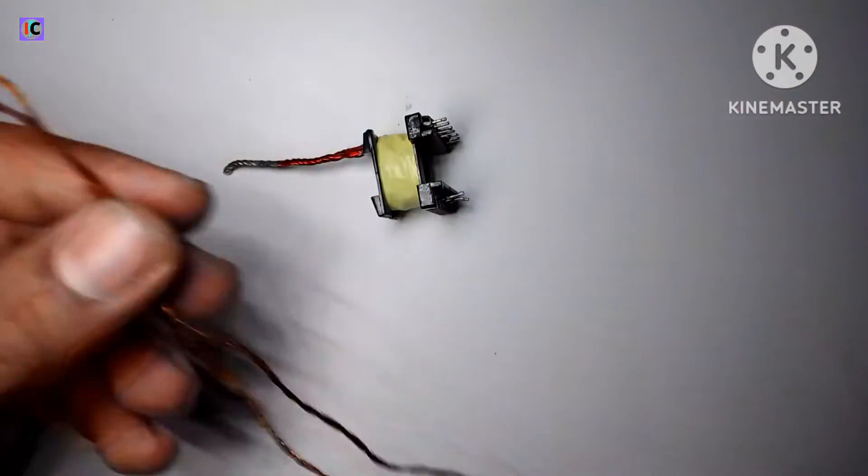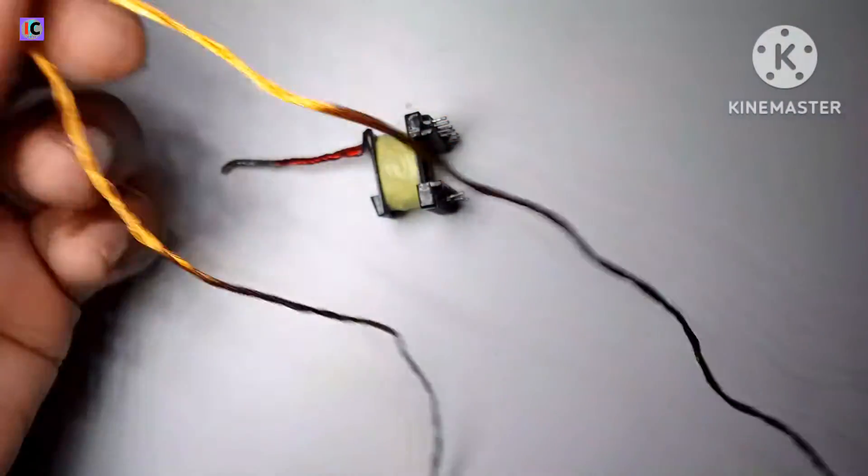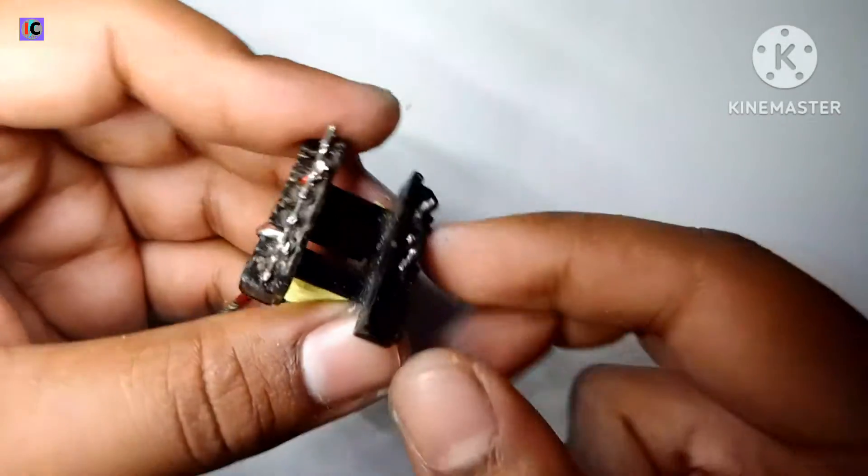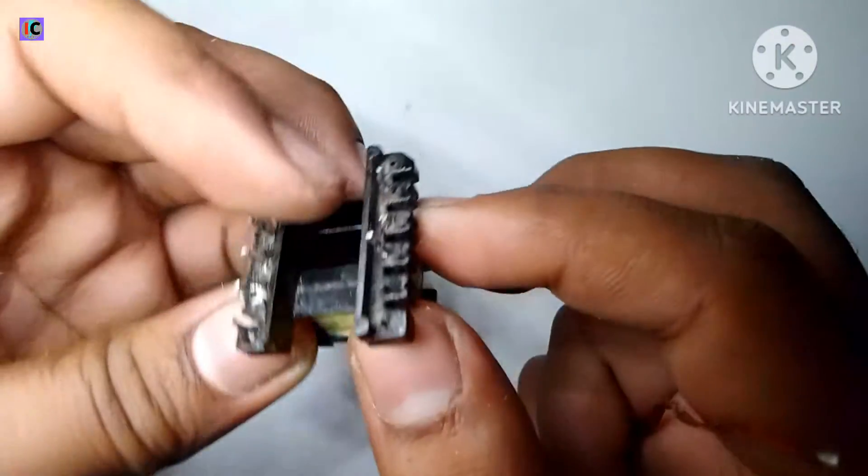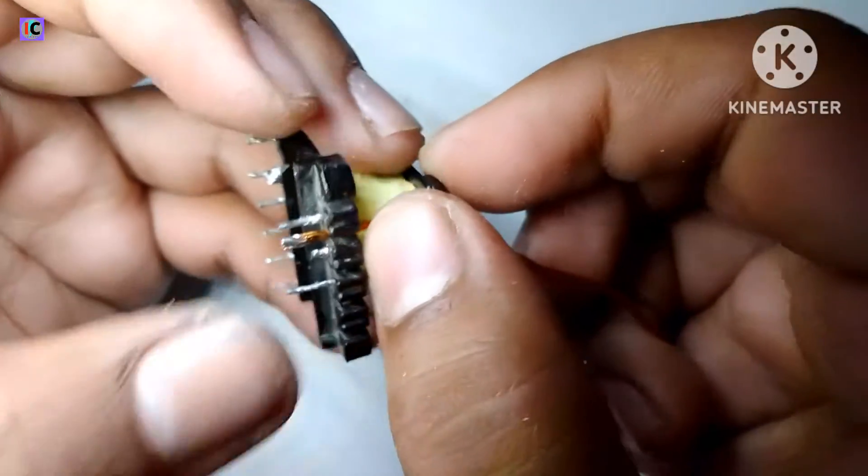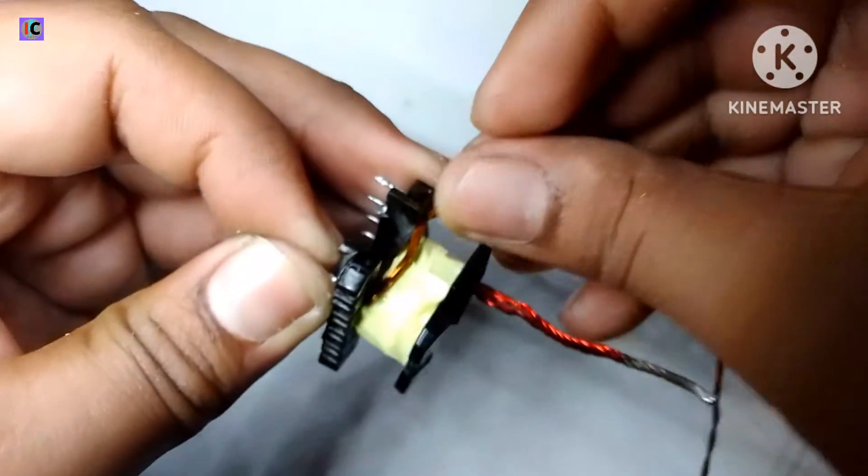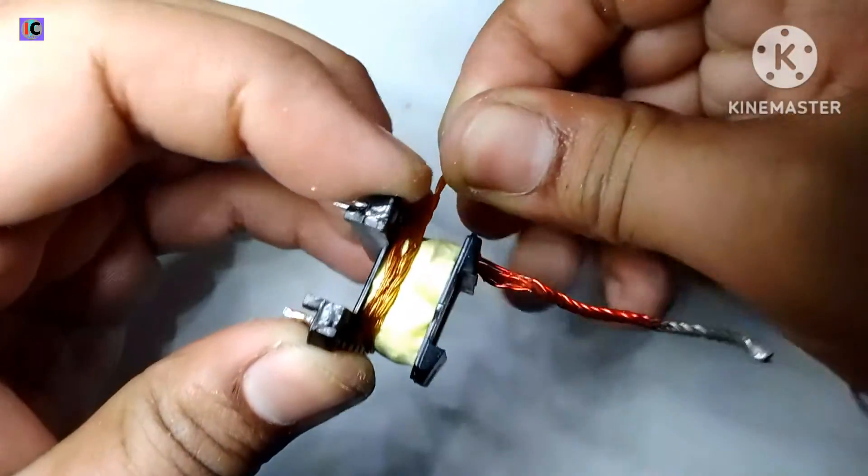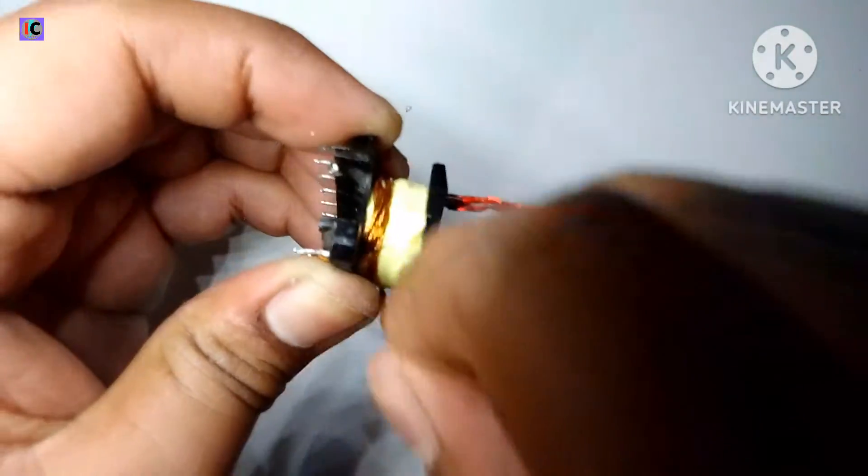We are using thin wires of multiple strands so that we can reduce the losses. Here you can see I am winding 6-0-6 turns for which we can give output of 20-0-20 volts at the output.